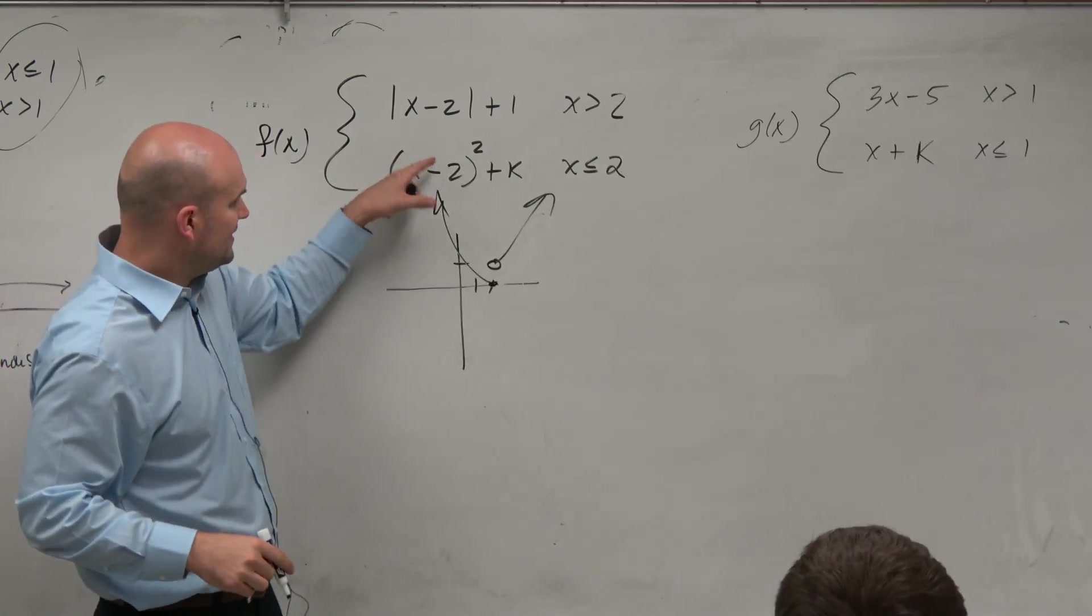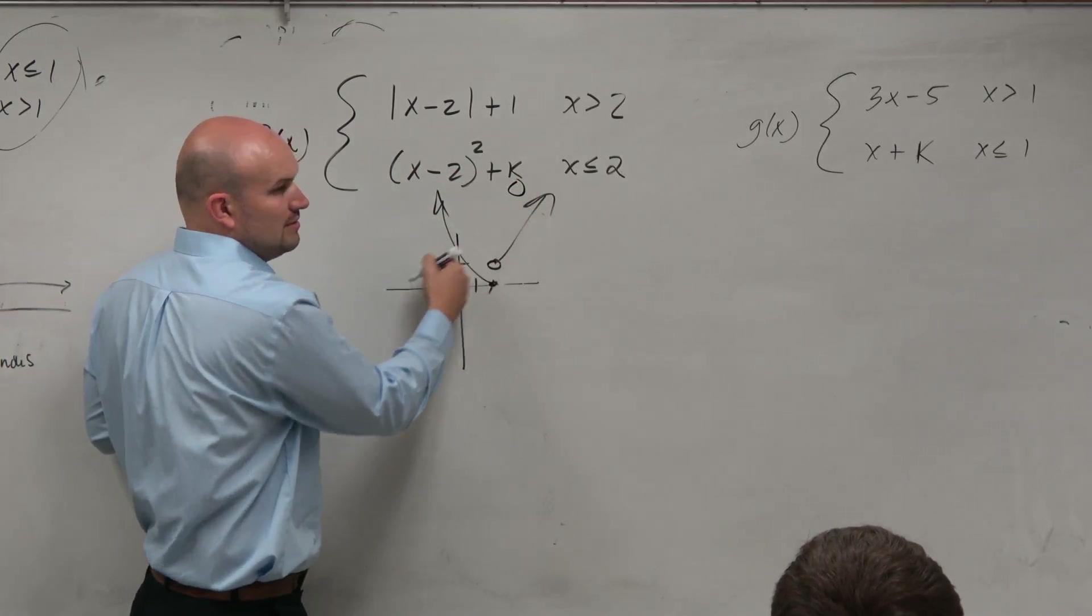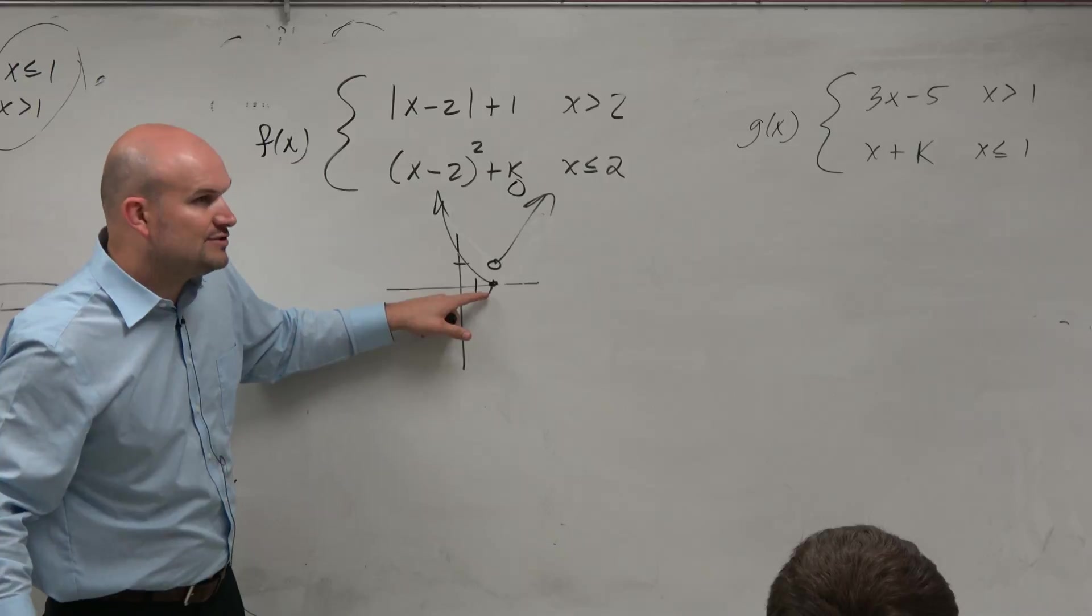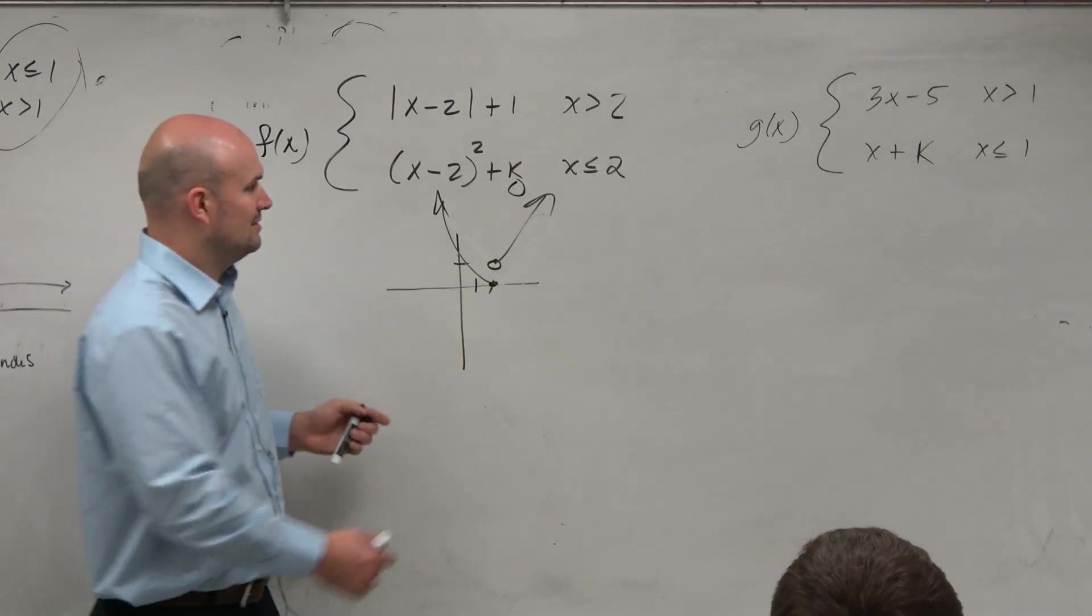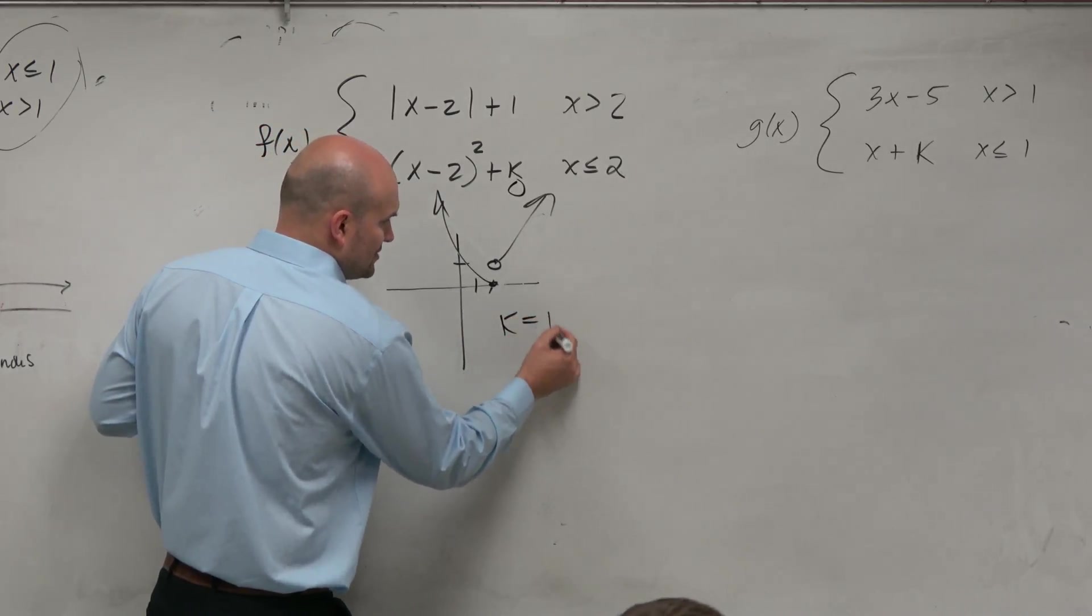So now, guys, if here is this when k is 0, what value of k do I want? What number do I want k to be so that goes up there? 1, right? So we could say k is equal to 1.